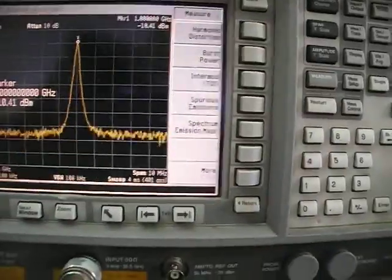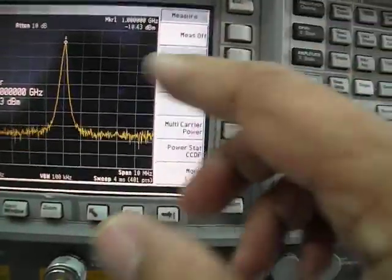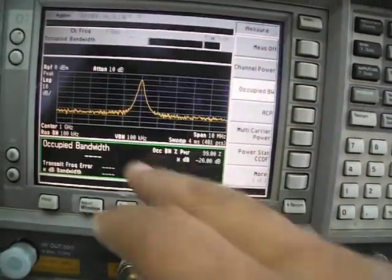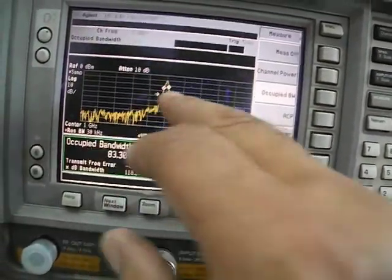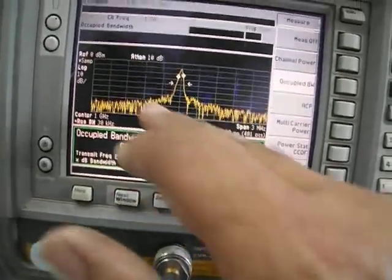So let's go back to the first one and see how it works. Let's do occupied bandwidth, and it will automatically calculate the bandwidth. Here it is - 22 kilohertz occupied bandwidth displayed on the screen. Beautiful screen.